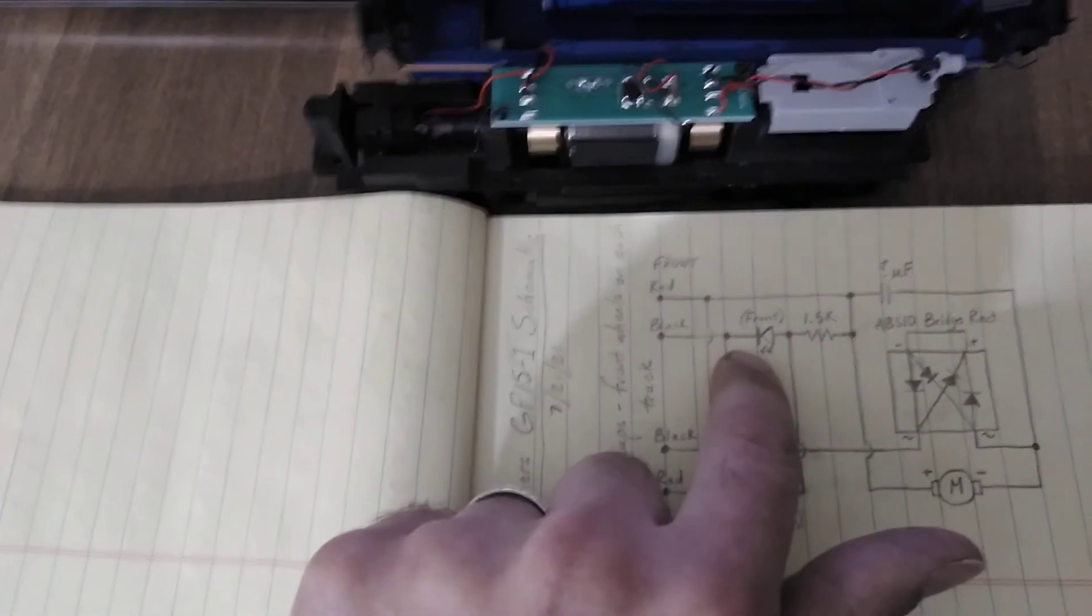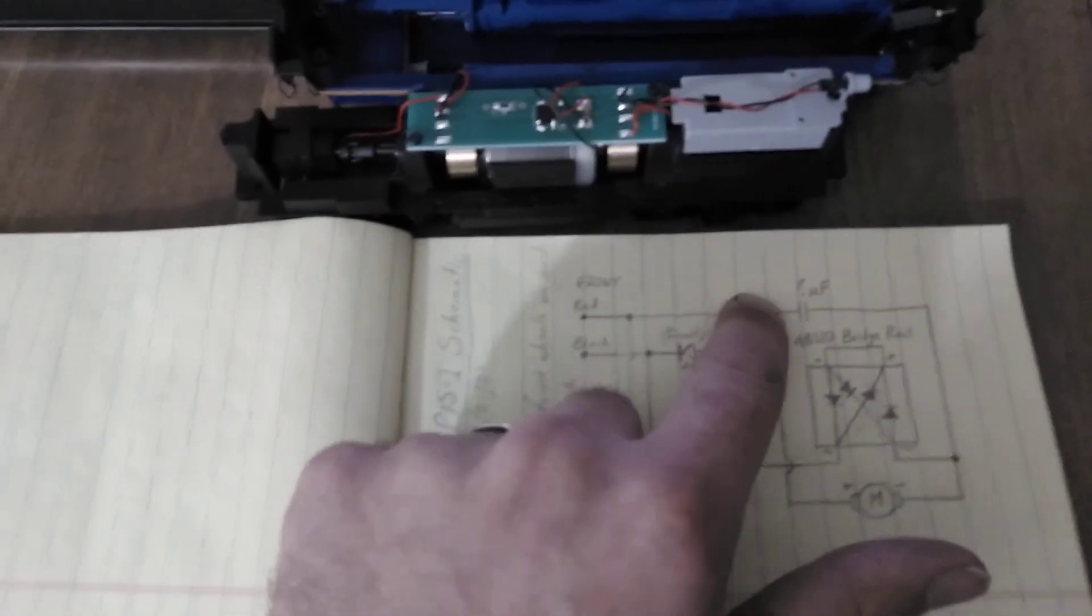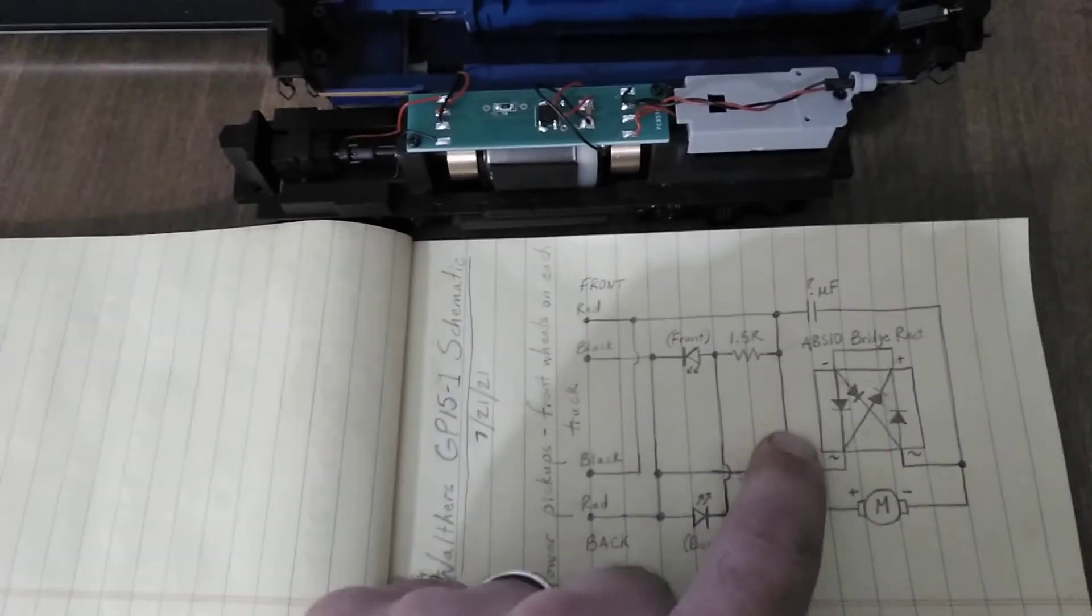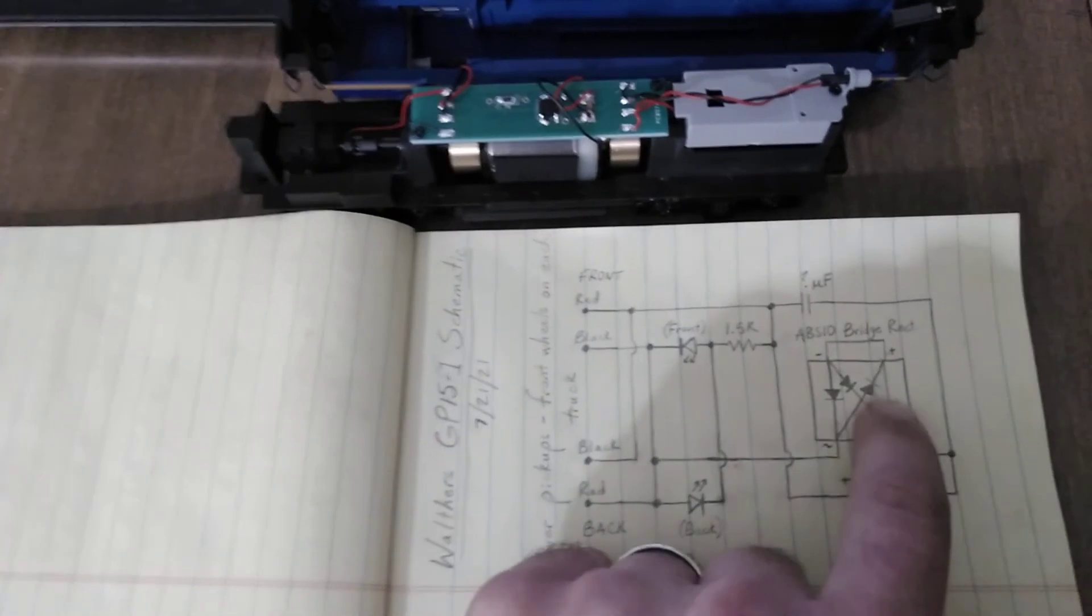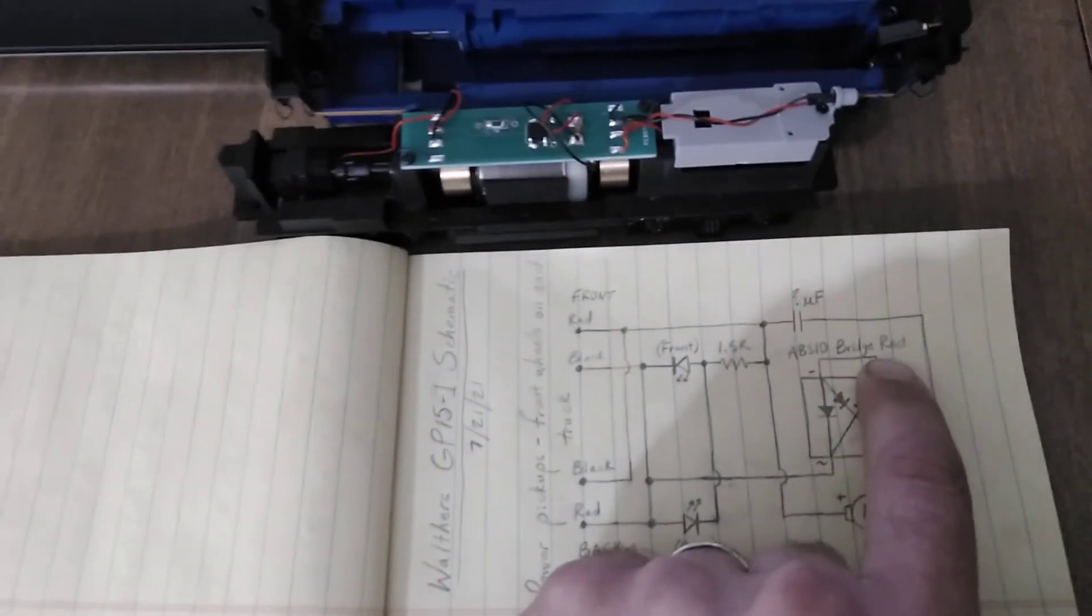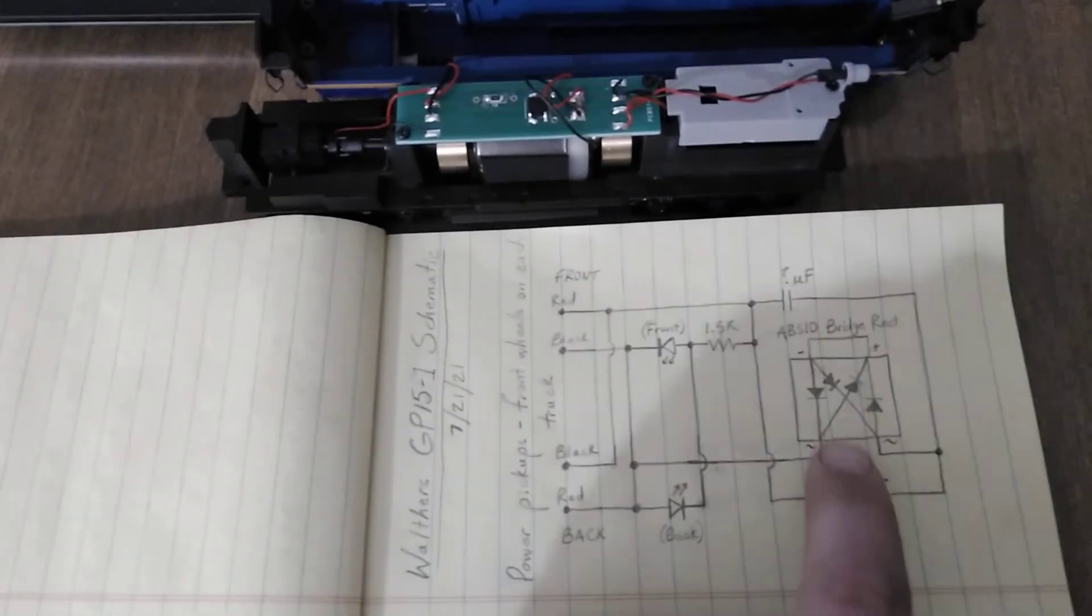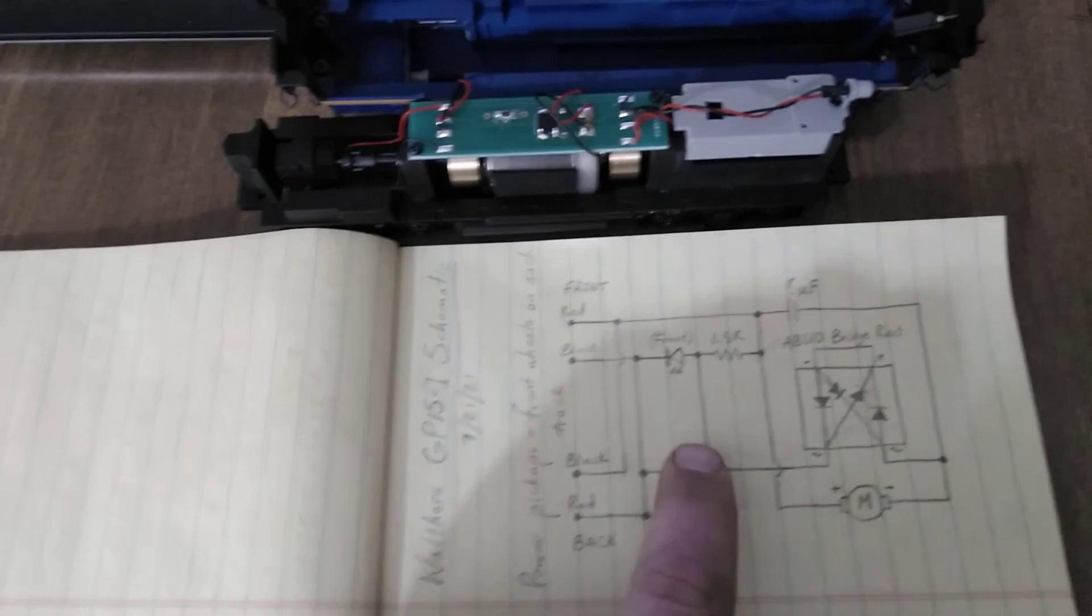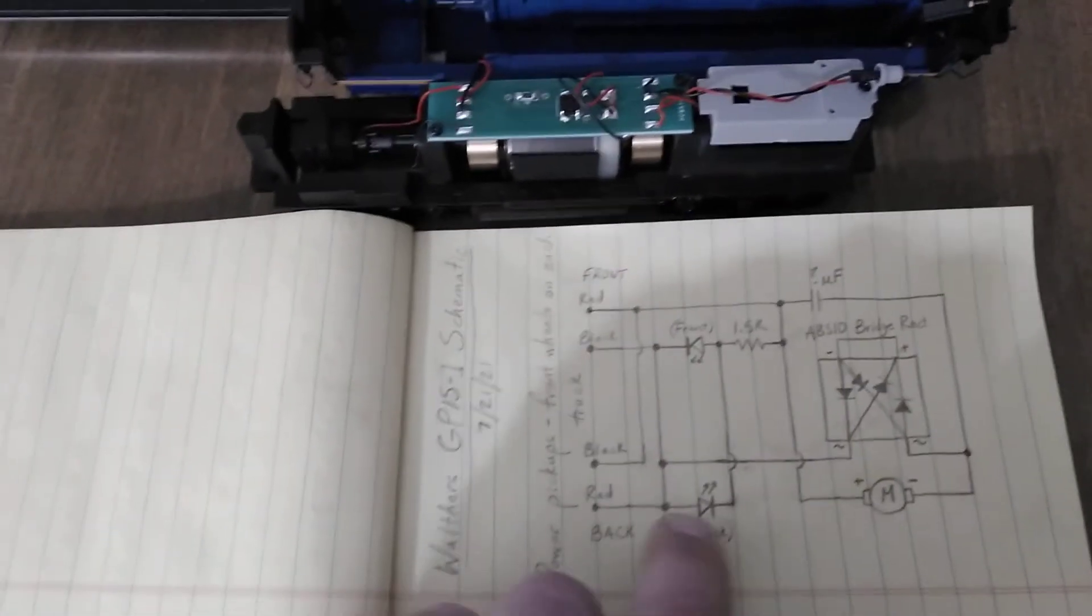Now what drives the motor is current that flows down this way through the motor plus to minus, and then through the bridge rectifier through the shorted outputs on it, and then back down this way and then through here to the other rail. So that's what's driving the motor.